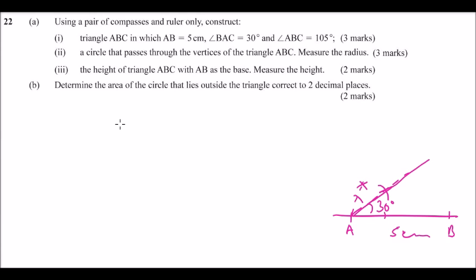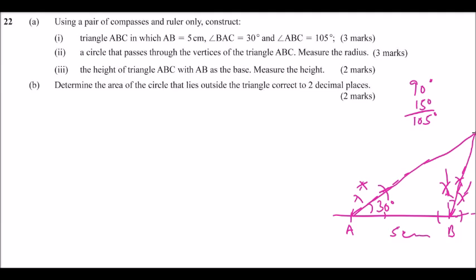Then angle ABC is 105°. How do you construct angle 105°? You construct angle 90° and you bisect angle 30° to get 15°, so that 90° + 15° adds up to 105°. So you first construct angle 90°, then construct angle 60° by extending that. You bisect this angle to get angle 15°. Then you extend those two lines up to where they meet — that is where you locate point C. So let's see how we go about it.